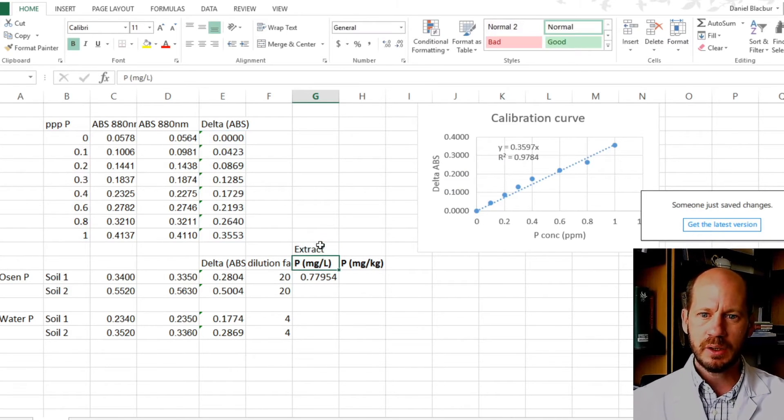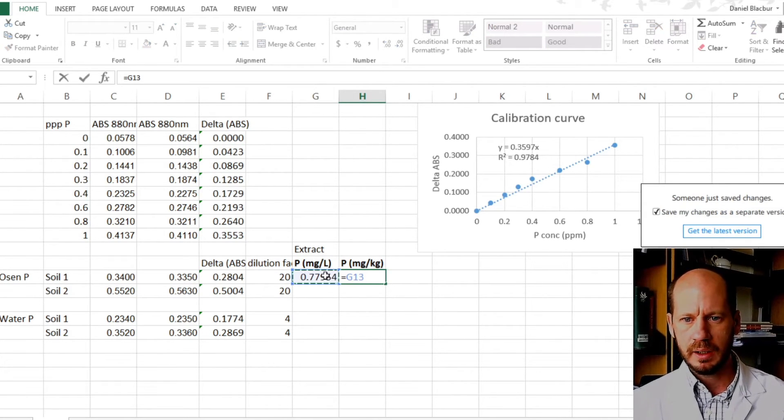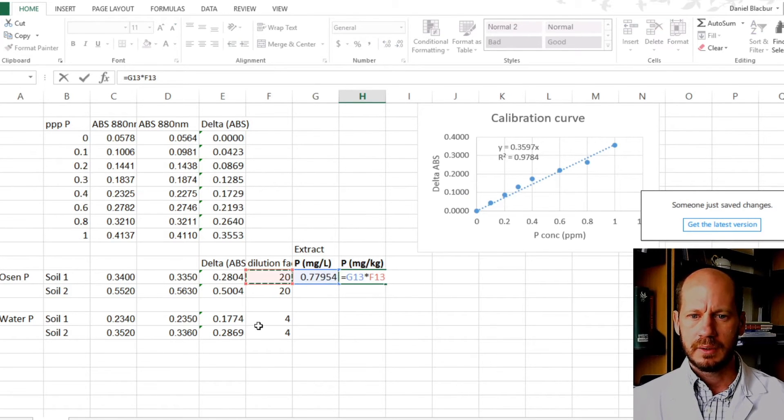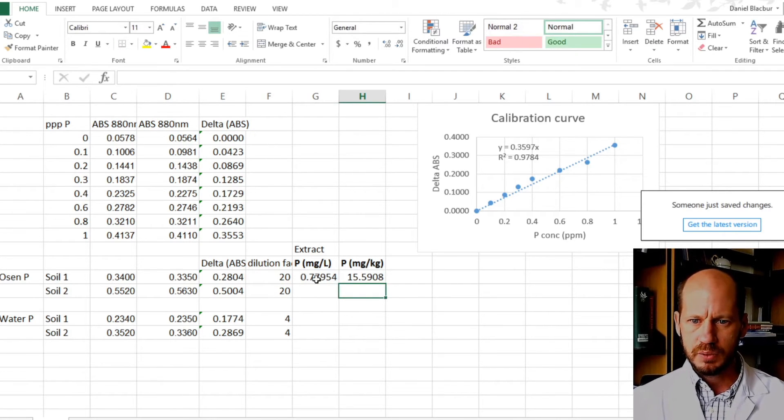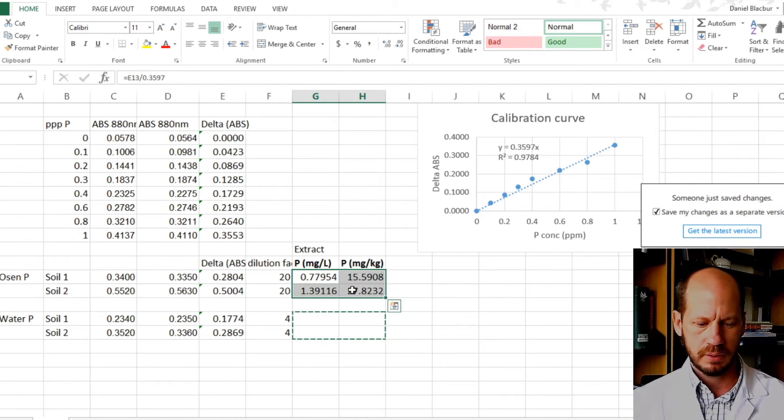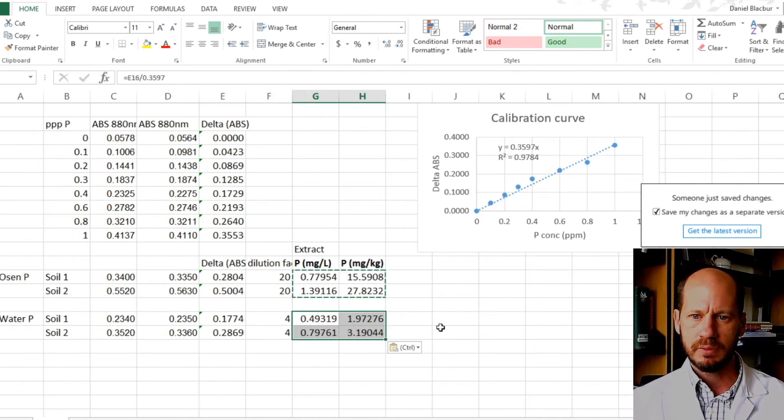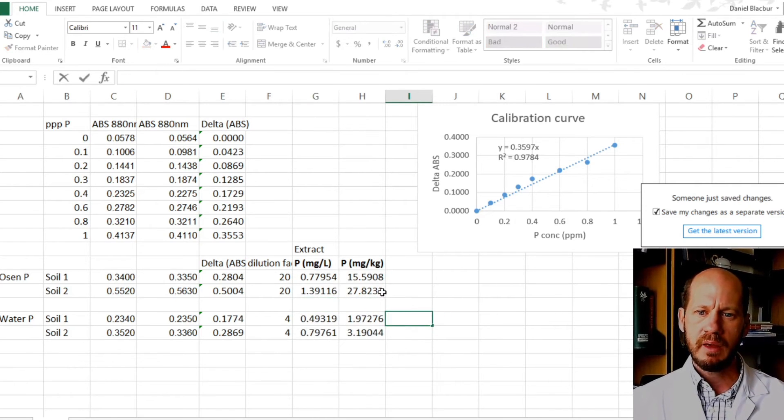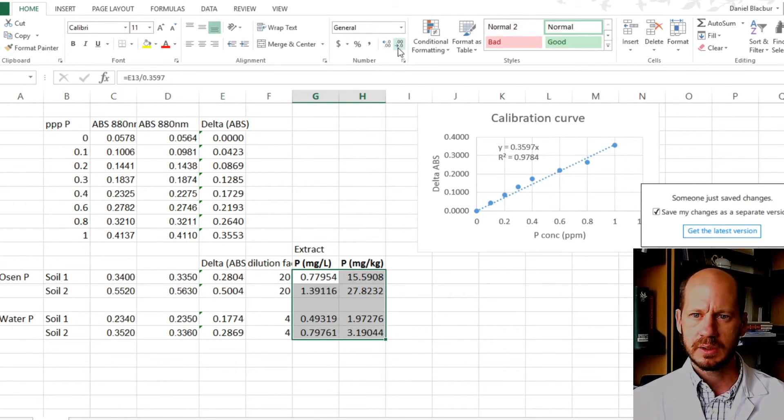Now, how much is there per kilogram of soil? What you need to do per kilogram of soil is multiply this value times 20, because 20 is the dilution factor. Let's place the same formulas here, and also for the water extract. The water extract will be multiplying the dilution factor of 4.